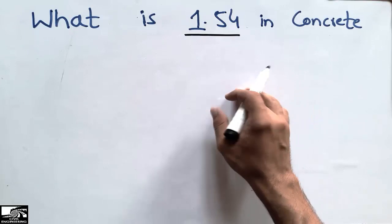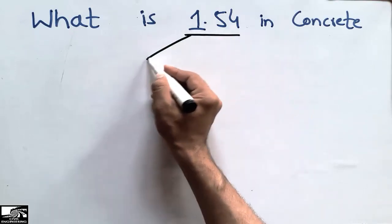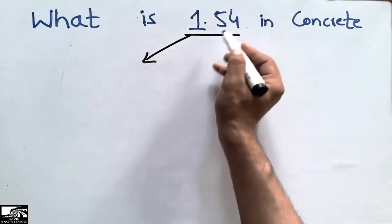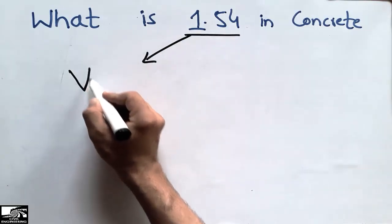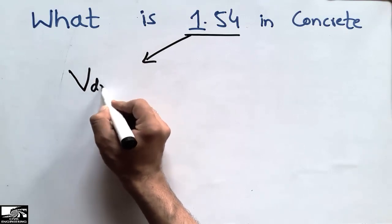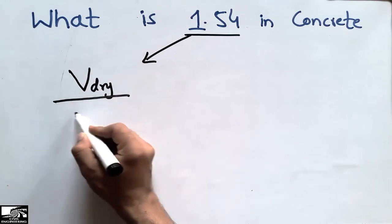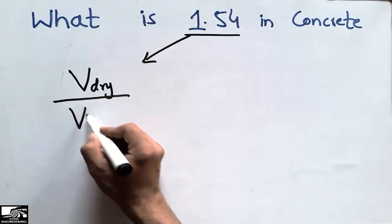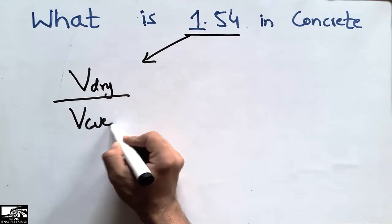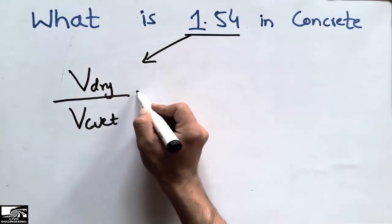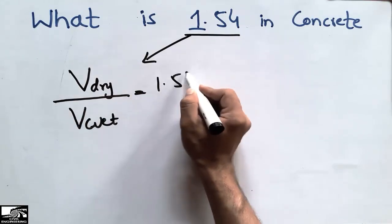The 1.54 ratio is actually the ratio of the volume of concrete in the dry condition to the volume of concrete in the wet condition. This ratio is equal to 1.54.